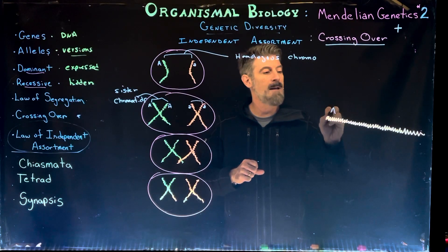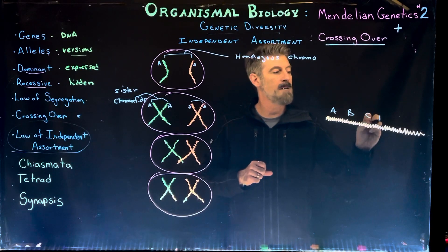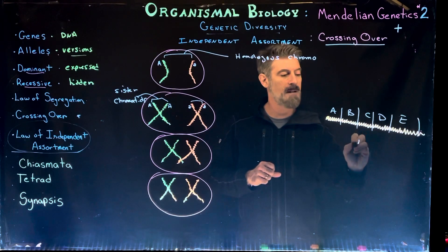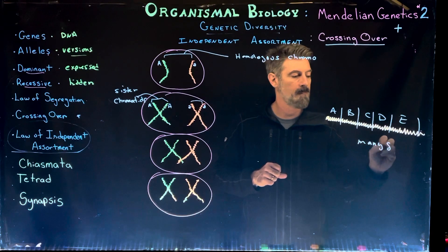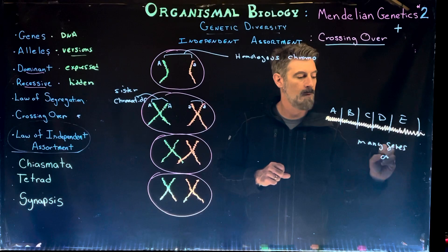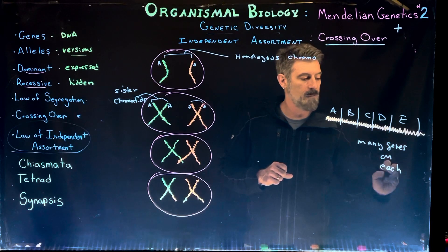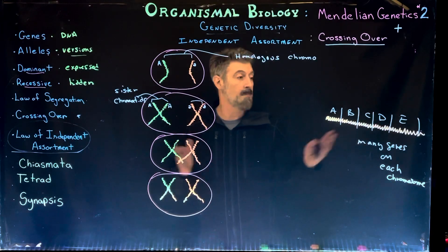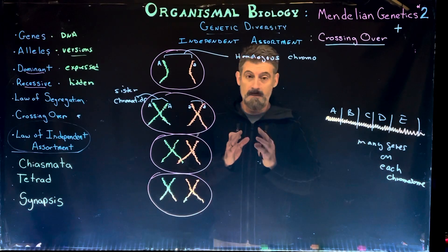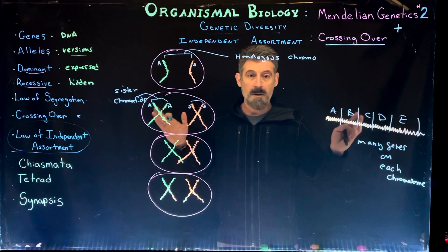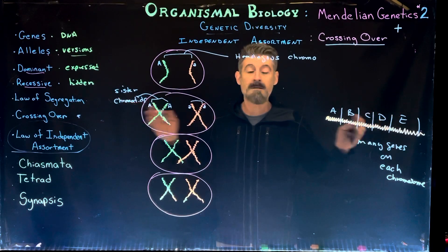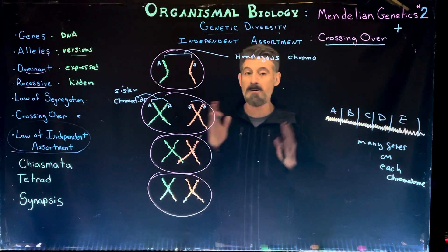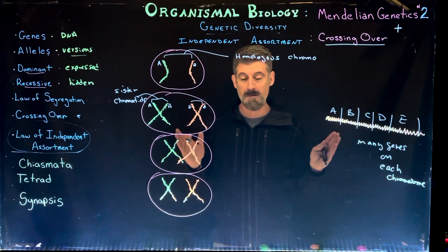On this chromosome there might be genes A, B, C, D, E — there are multiple genes on each chromosome. This is just an example; there could be a lot more than five. Some genes are very small, some are very large, so some chromosomes might have fewer genes because they have bigger genes, and some chromosomes have more because they have a number of smaller genes. The genes aren't all the same size in terms of their length.